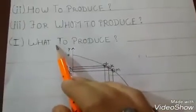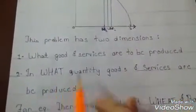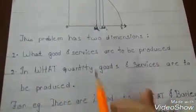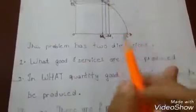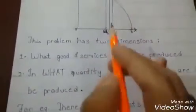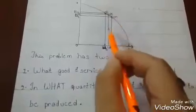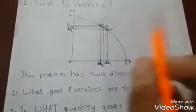Toh yahi di problem 'what to produce' wali ki — kya produce karna hai aur kisi quantity mein produce karna hai. Jo humne yaha padha: what goods and services are to be produced, and what quantity of goods and services are to be produced. Yaani ki hamne kya produce karna hai — wheat produce karna hai ya phir barley, ya phir kitni quantity mein karna hai — wheat ki quantity increase karna hai aur barley ki decrease, ya wheat ki decrease karna hai aur barley ki increase karna hai.